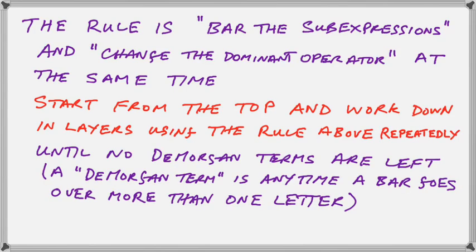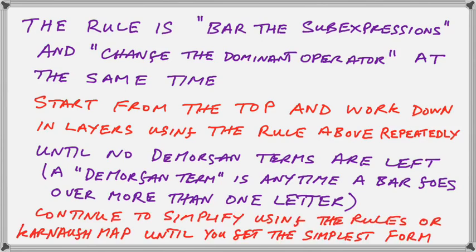Until no DeMorgan terms are left. A DeMorgan term is any time a bar goes over more than one letter. Continue to simplify using the rules or Karnaugh maps after you've finished removing all DeMorgan terms until you get to the simplest form.